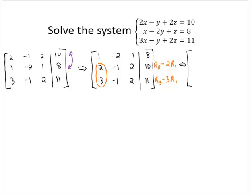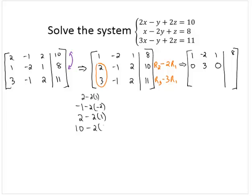Top row stays the same. 1, negative 2, 1, 8. Now go term-wise. Go element by element. 2 subtract 2 1's is 0. Negative 1 subtract 2 negative 2's is negative 1 plus 4. That's 3. 2 subtract 2 1's is 0. And 10 subtract 2 8's. 10 subtract 16 is negative 6.